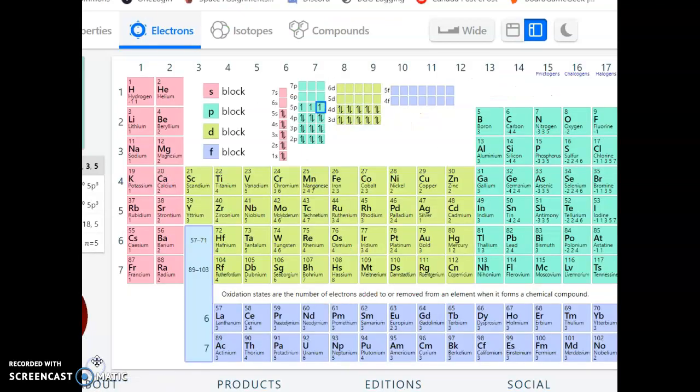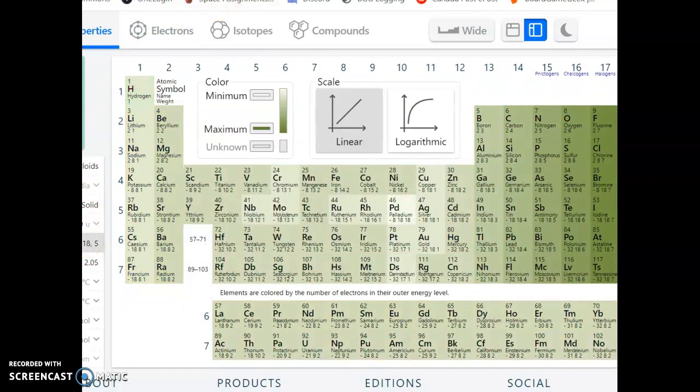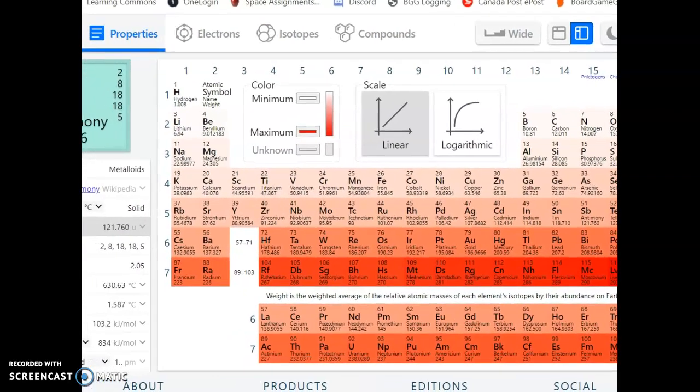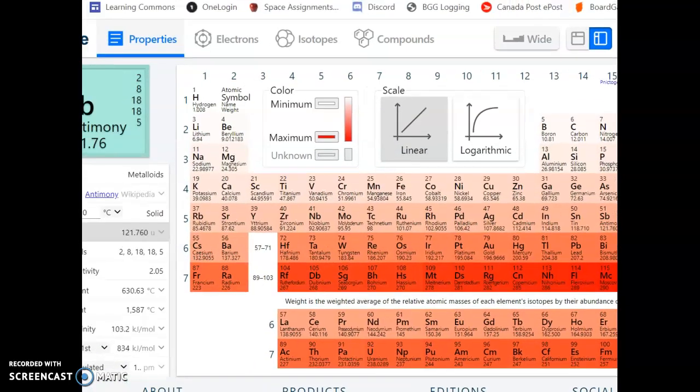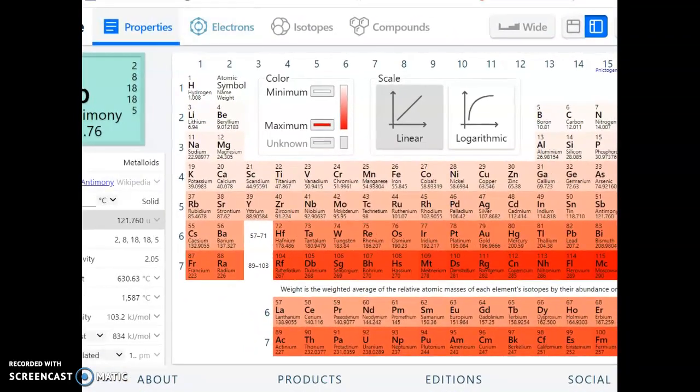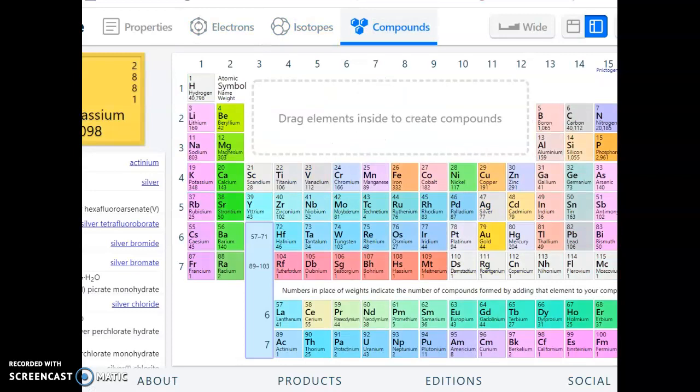This is an interactive periodic table. So you can look at it, let me expand this for a second. Okay, so ptable.com, and the symbol looks like that. There are different periodic tables you can look at, based on properties, based on the electrons, isotopes, and compounds that they make. It's actually a very cool site.